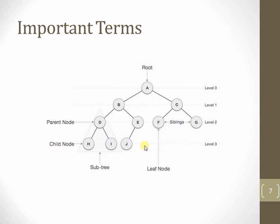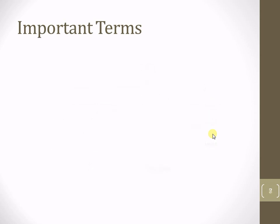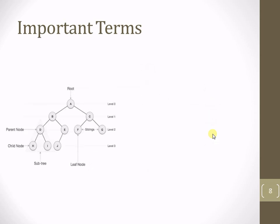In this diagram, A, B, C, and D are the nodes, and the lines between them are the edges. There are different terminologies: root, parent node, child node, subtree, siblings, leaf node, and levels. I am going to explain each one by one in the next slides. So let's move to the next slide where, with the help of the same diagram, I will explain all the terms.